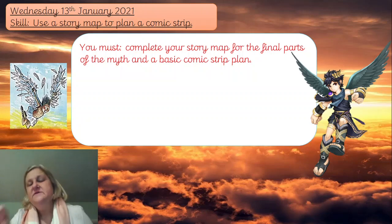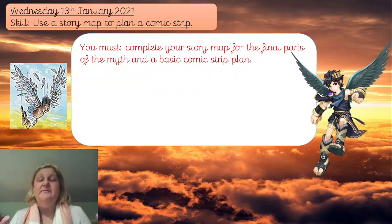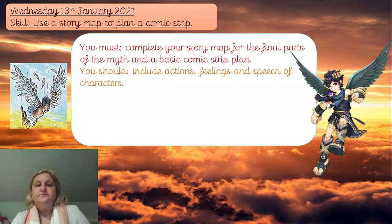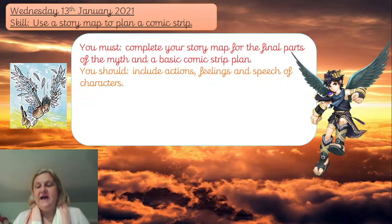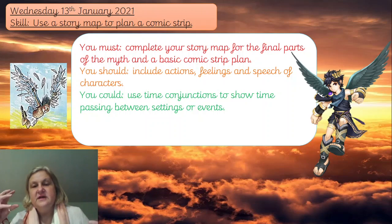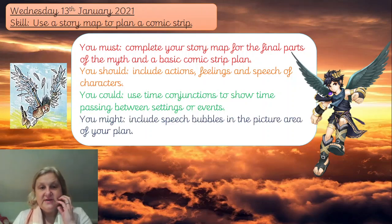So here is your success criteria for today. You've got to complete your story map for the final parts of the myth: the sun section and the sea section — probably the best bit of the story, with the tragic ending included. You're also going to need to make your comic strip plan today. You could include the characters' actions, what's happening, how they're feeling, and some speech — not too much speech, as it becomes difficult to follow. You'll need some time conjunctions to move the story forward or slow it down, and you can include speech bubbles in the picture area of your plan.